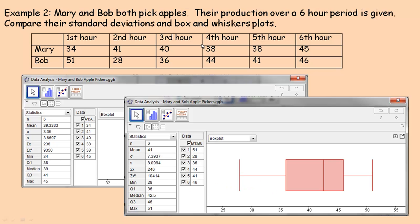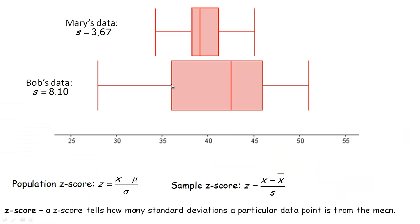If you look at the data, you can see that Mary has 34, 41, 40, 38, 38, 45 — except for the 34, she's all right around 40 or so. But Bob is inconsistent: he's got a 51 and a 28 — that's almost double. You can see from the graph that he is more inconsistent. So the standard deviation: the larger it is, the more spread out the data is; the smaller it is, the more condensed it is.